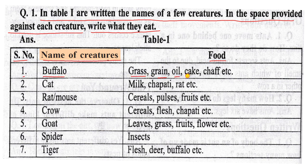Now let's fill in the table. For number four: crow — crow selects less chapati — carnivorous. For number five: goat — leaves, grass, fruit, flowers — herbivorous. For number six: spider — carnivorous. For number seven: tiger — tiger eats deer — carnivorous.